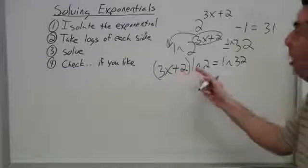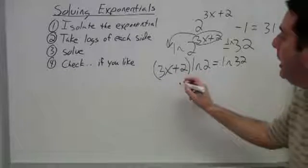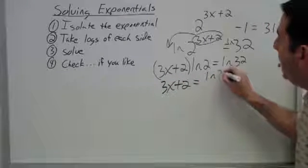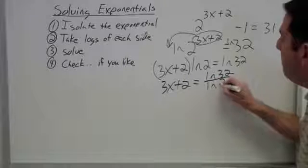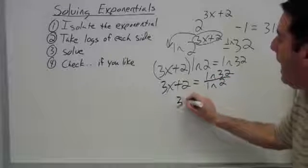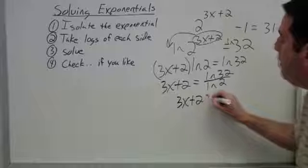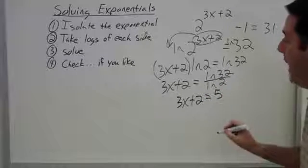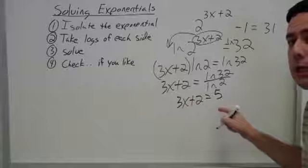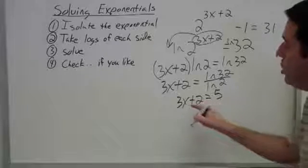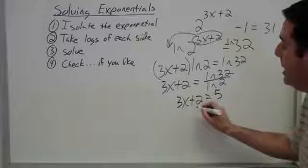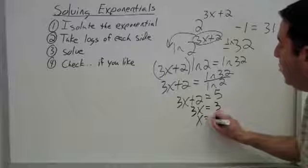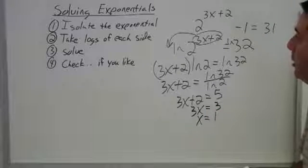Now, since these things are being multiplied together, let's take both sides and divide by LN of 2. You can type that in your calculator and see that when you divide LN of 32 by LN of 2, you're left with 5. This linear equation to solve now requires me to isolate the x, subtracting 2 from both sides and dividing by 3. Looks like 1 is our solution.